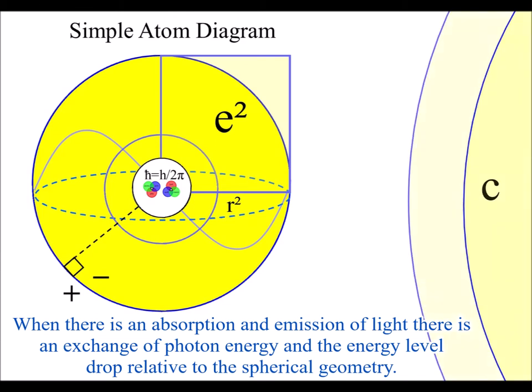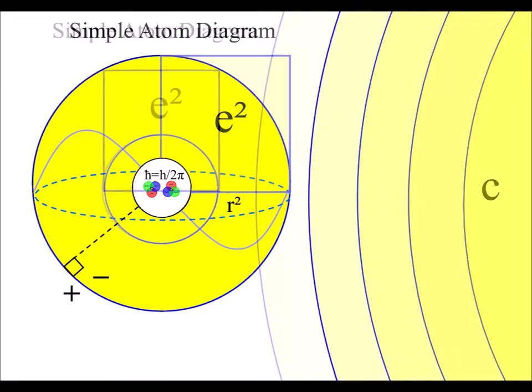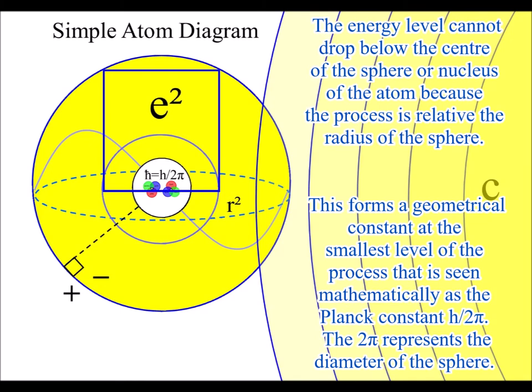I am going to use these simple diagrams of an atom to explain how the equations of physics represent a geometrical process of energy exchange. When there is an exchange of photon energy, the energy levels drop with the absorption and emission relative to the spherical geometry.